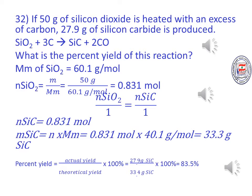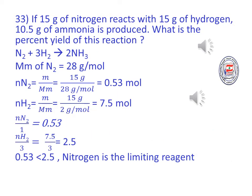The number of moles of SiO2 equals 0.831 moles. Find the mass of silicon carbide, which equals number of moles times molar mass, equal 0.831 moles times 40.20 grams per mole, equals 33.3 grams. Percent yield equals actual yield divided by theoretical yield times 100%, equal 27.90 grams divided by 33.40 grams times 100%, equals 83.5%.